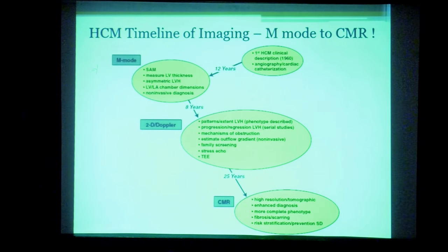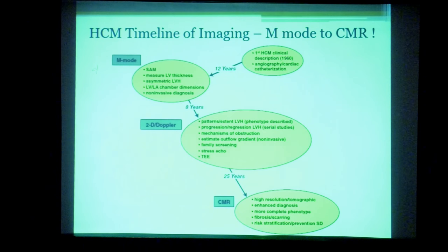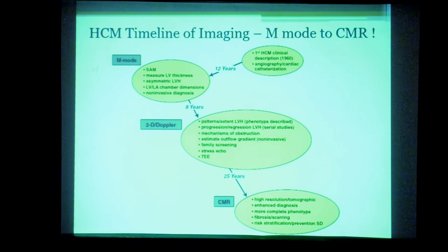Initially HCM was described only on angiography and cardiac catheterization. Around a decade later, M-mode enabled us to describe SAM, LV thickness, and LV dimensions. Another decade on, 2D Doppler allowed differentiation of phenotypic patterns of HCM, mechanisms of LVOT obstruction, and Doppler-derived gradients. Transesophageal echo followed, and over the subsequent two and a half decades, CMR emerged with high-resolution imaging providing information on fibrosis and scarring. CMR is now the gold standard for evaluation of HCM.